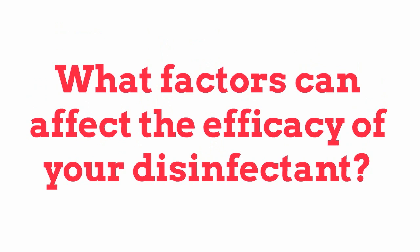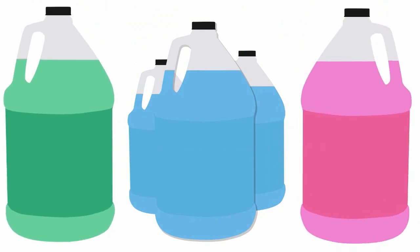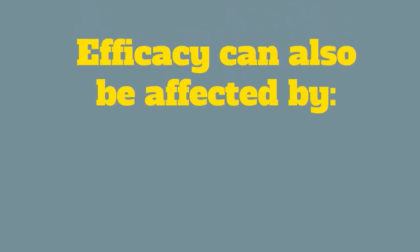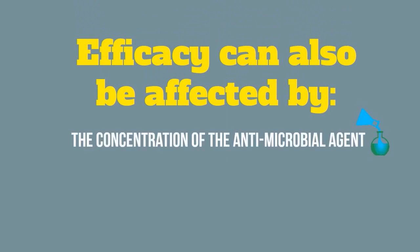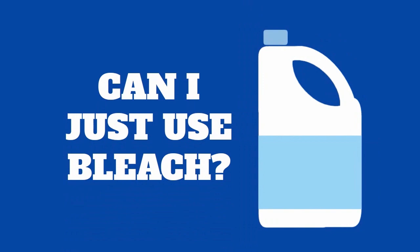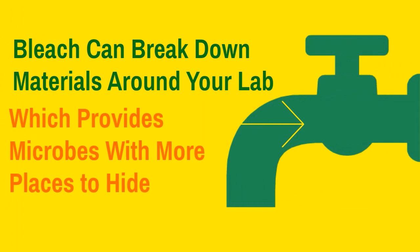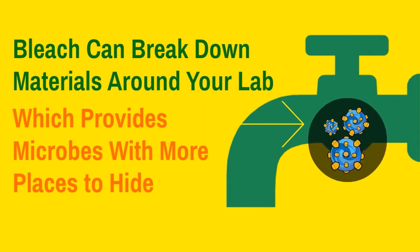What factors can affect the efficacy of your disinfectants? Besides the fact that different types of disinfectants and sterilants can kill different microorganisms, efficacy can also be affected by the concentration of the antimicrobial agent, composition of the microbial population, and the contact time. Probably the most common question we get is whether labs can just use bleach. While bleach has proven efficacy against a number of pathogens, it can also break down materials around the lab, which provides those same microorganisms more places to hide.